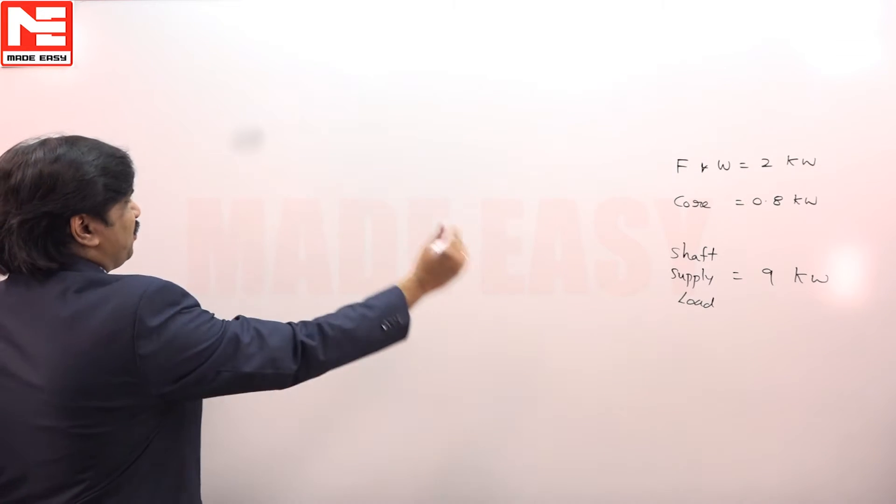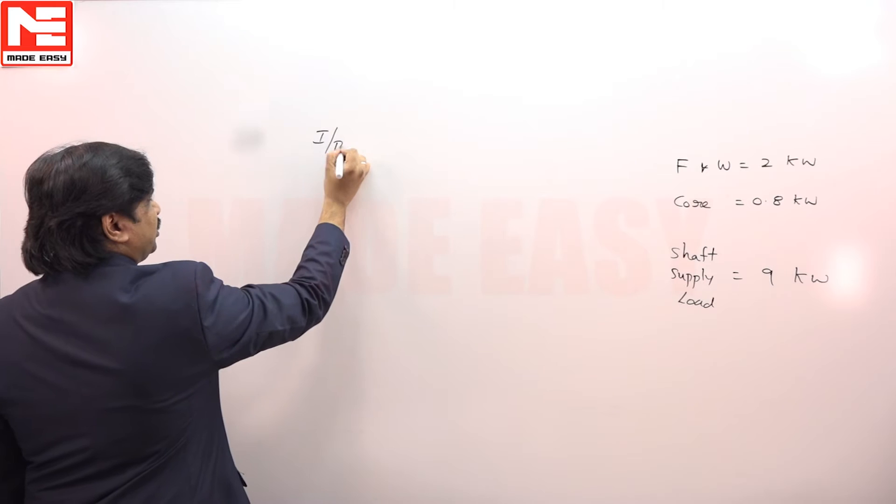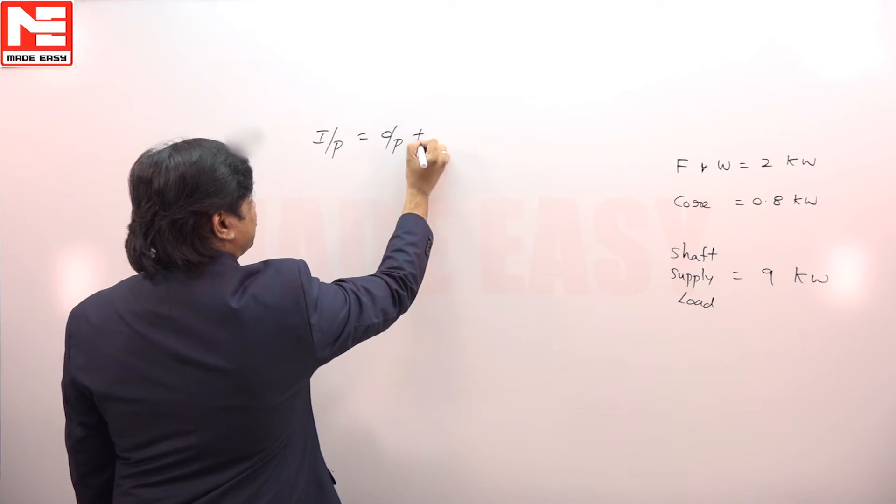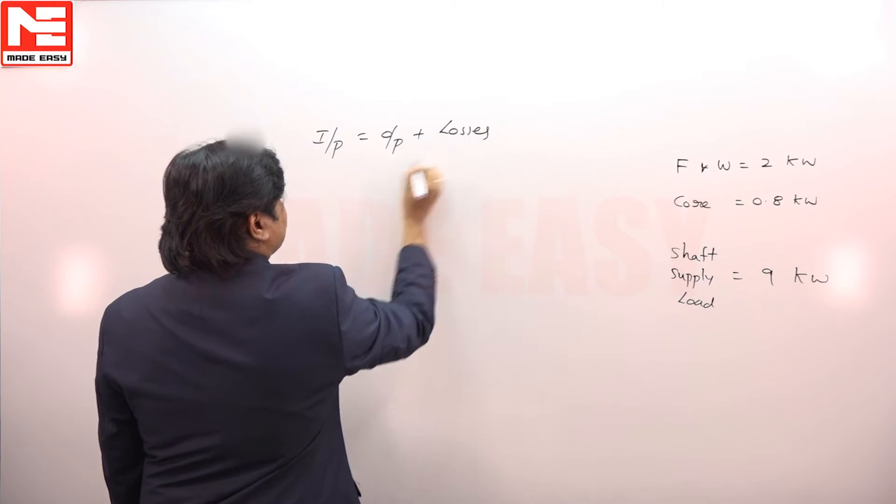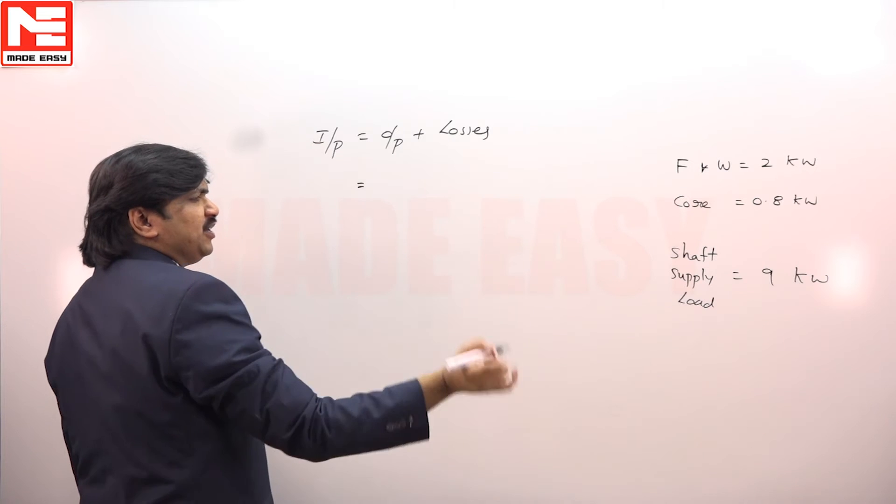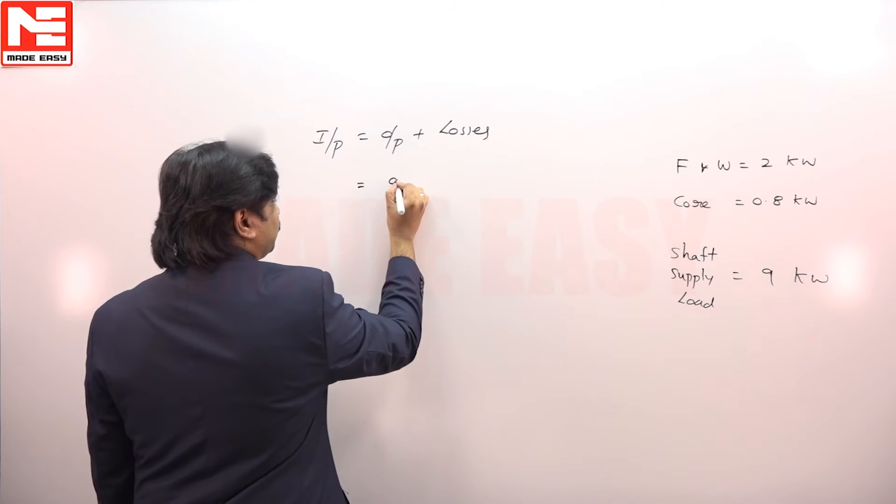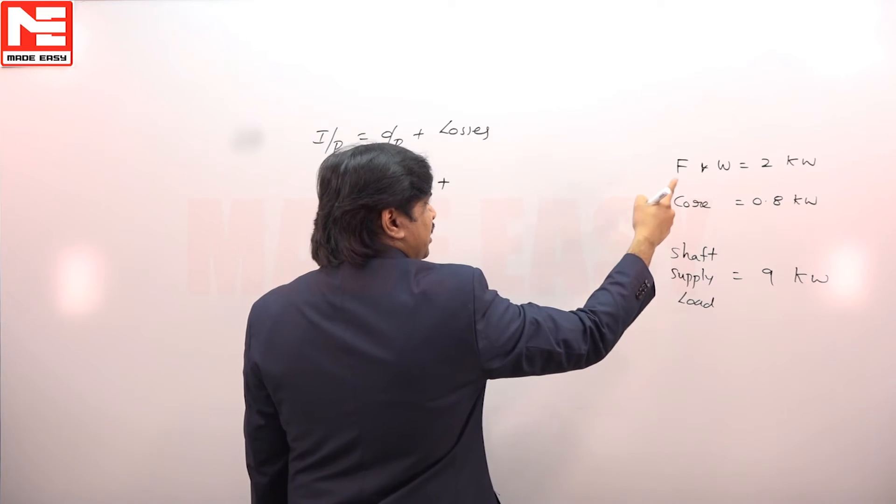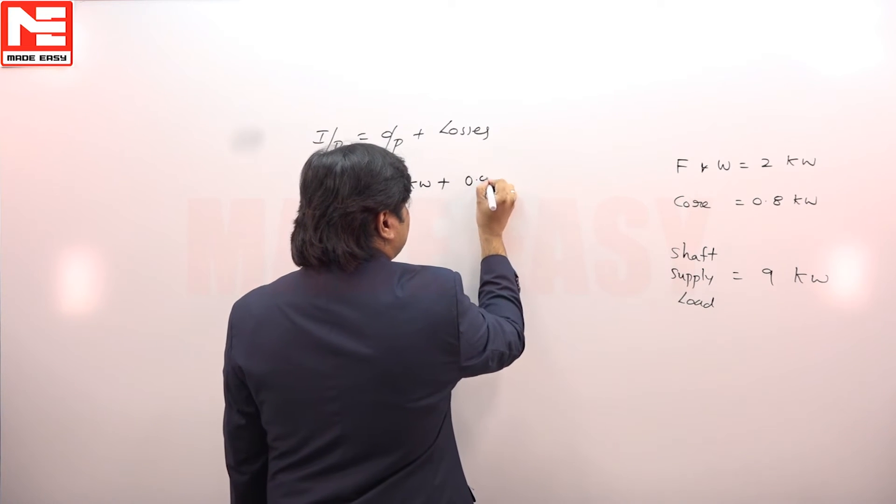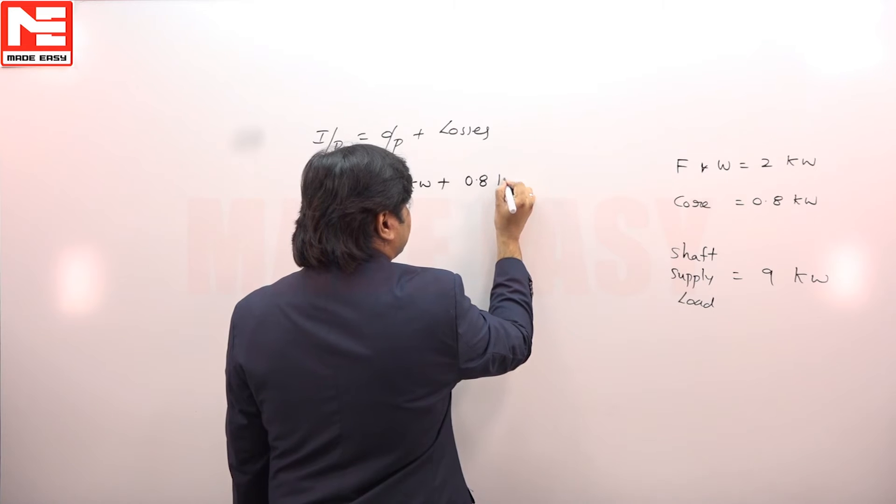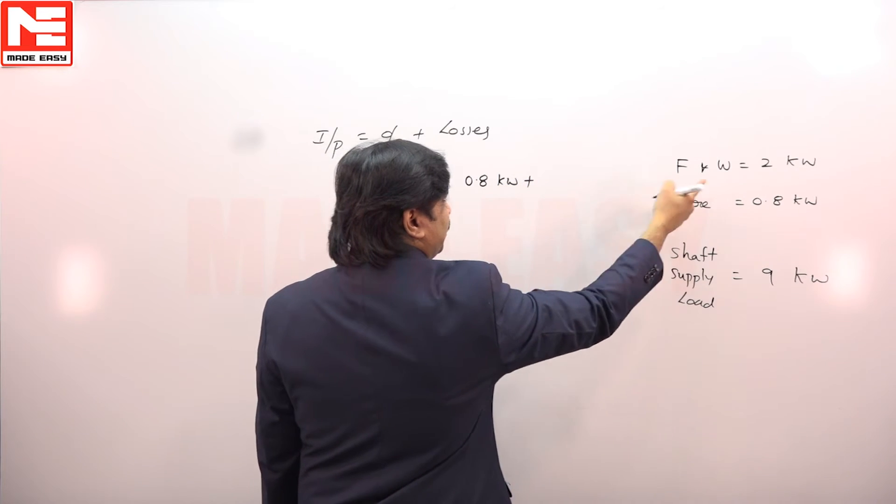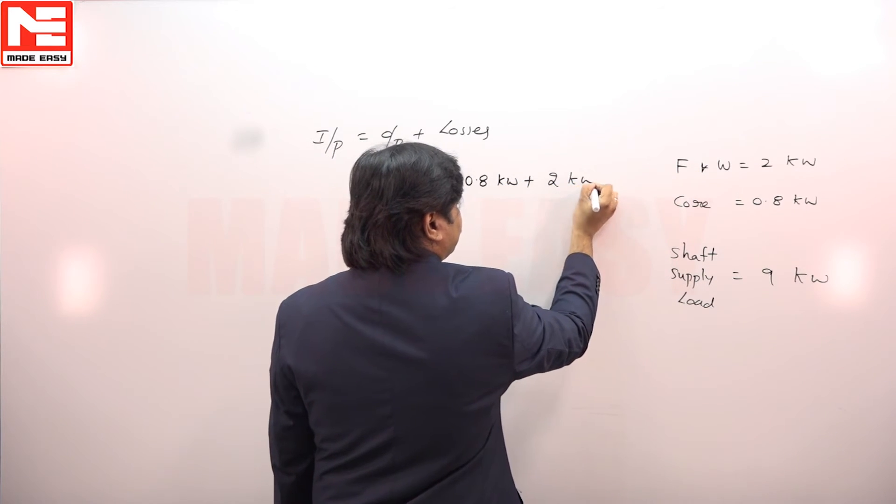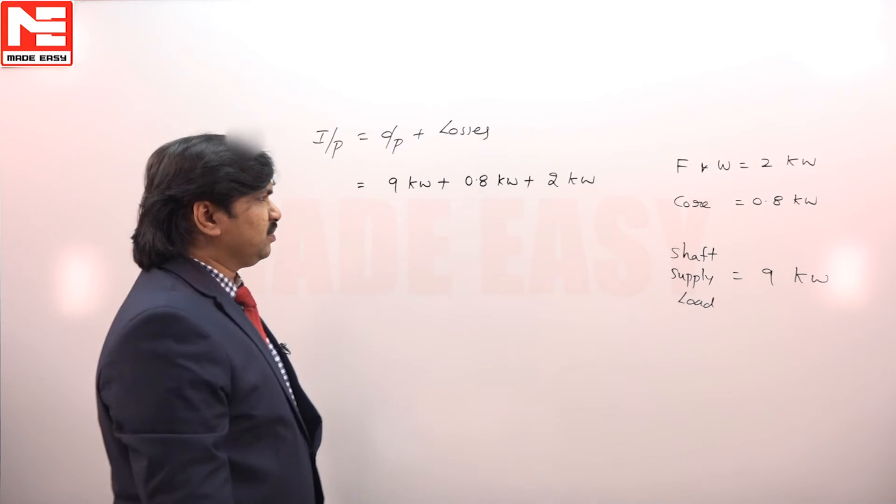So we have input is equal to output plus losses. What is the ultimate shaft output given in the question? 9 kilowatt. Plus what are the losses? Core losses 0.8 kilowatt plus friction and windage losses 2 kilowatt. These are all the losses given in the question.